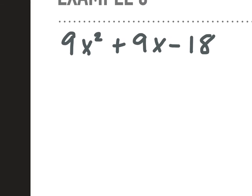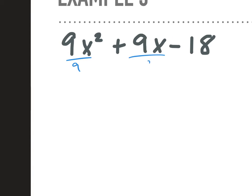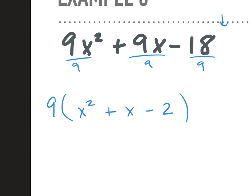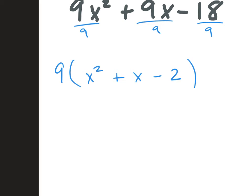Alright, let's look at the next one. What is our greatest common factor? We can take out a 9, so we're dividing everything by 9. Do we have any x's we can take out? No, because this last term doesn't have any x's. So what are we left with on the inside of our parentheses once we take out the 9? x squared plus x minus 2. We still have three terms in our parentheses, so this looks like one of the problems we did yesterday — we need to factor it. Do we have two factors of negative 2 that add up to positive 1?